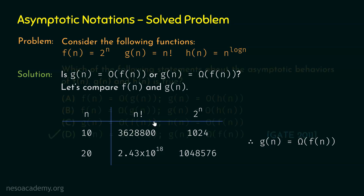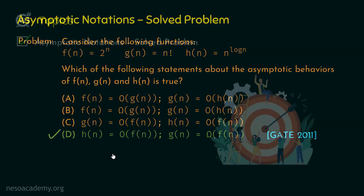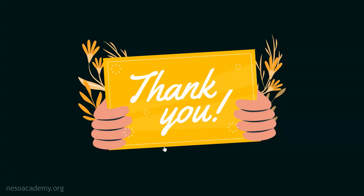Hence option D is the correct option. It is not the case that gn is big O of fn; it is the case that gn is big omega of fn. So option D is correct. I hope it is clear how to solve these types of problems. Thank you for watching this presentation. I will see you in the next one.